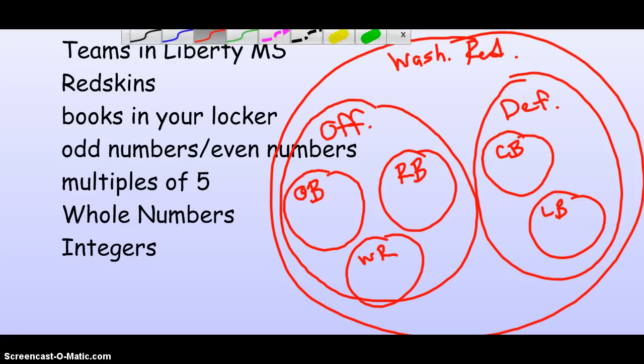And then from here, we can actually list the elements in each set. So, if I go to quarterbacks, we, of course, have RG3. Still got Rex Grossman on the team. So, those are two elements in the set of quarterbacks.